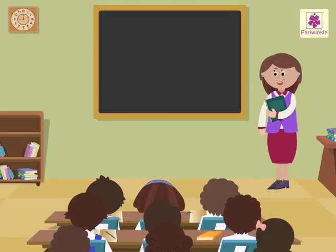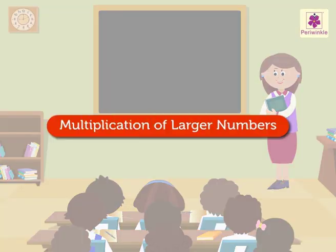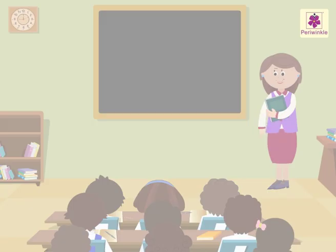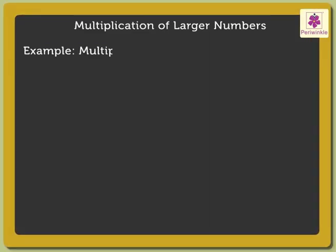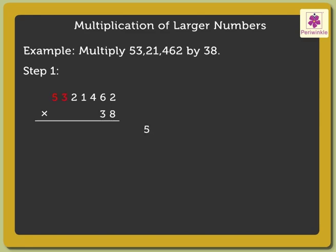Today, let us learn multiplication of larger numbers. Let us multiply 53,21,462 by 38. We can divide the whole process into three steps. Step 1: Multiply 53,21,462 by the ones digit of the multiplier, that is 8.